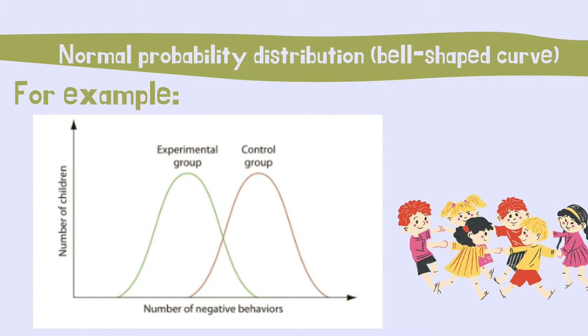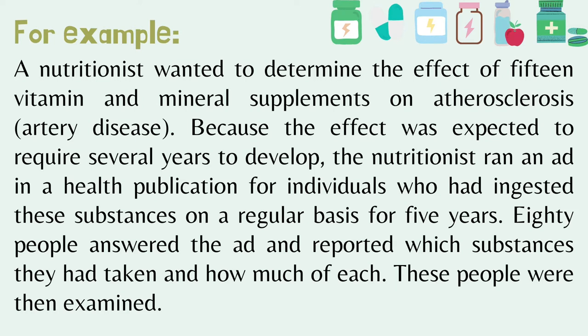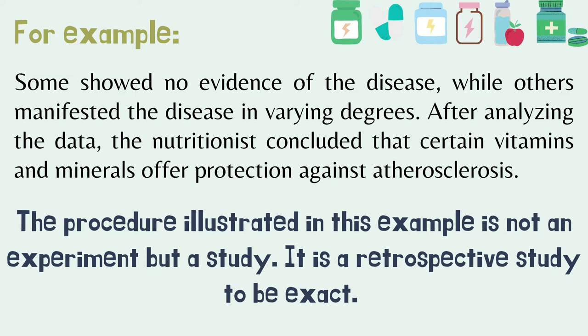This means that most of the children in the experimental group exhibited fewer negative behaviors than most of the children in the control group, though certain children in the experimental group exhibited more negative behaviors than certain children in the control group. Another example: a nutritionist wanted to determine the effect of 15 vitamin and mineral supplements on atherosclerosis, or artery disease. The nutritionist ran an ad in a health publication for individuals who had ingested these substances regularly for 5 years. 80 people answered the ad, reported which substances they had taken and how much of each, and were then examined. After analyzing the data, the nutritionist concluded that certain vitamins and minerals offer protection against atherosclerosis. The procedure illustrated in this example is not an experiment but a study.